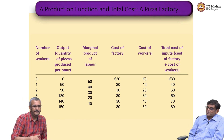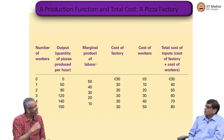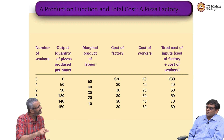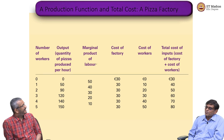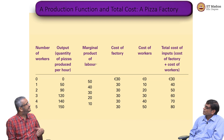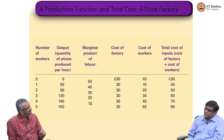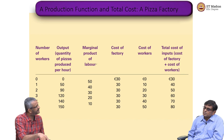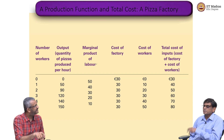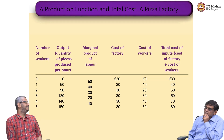As I keep increasing production, I notice that my marginal product of labor actually keeps falling. Initially it was 50 units, then 40, then 30, 20, 10. I find a parallel here from our consumption theory — we talked about the marginal utility of consumption, and we discussed that after a point the marginal utility keeps diminishing. Exactly like that: if you have one factor of production fixed and keep varying the other, initially the marginal product will be high, after that it keeps falling.